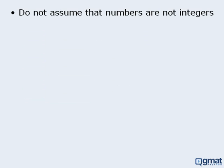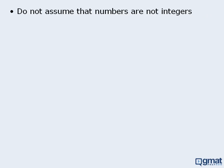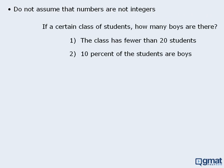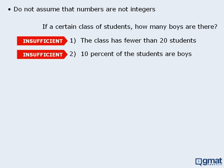The next tip is: do not assume that numbers are not integers. For example, in this question we have a class of students, and we want to determine the number of boys in the class. Statement 1 tells us that there are fewer than 20 students in the class, which certainly does not provide enough information, so this statement is not sufficient. Statement 2 tells us that 10% of the students are boys. Since we don't know the total number of students, there is no way to determine the number of boys, so statement 2 is not sufficient.